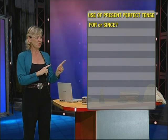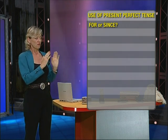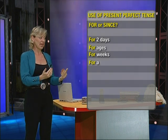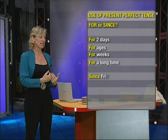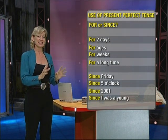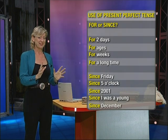Just look at the examples we practiced: for two days, for ages, for weeks, for a long time — duration. Then: since Friday, since five o'clock, since 2001, since I was young, and since December. So we have just, ever, already, never, yet — and FLOT and SPOT, which is 'for' and 'since.' This is when we use the present perfect. Now let's go back and see if Jack has managed to convince Sharon to go to Japan. Bye, bye. Thank you.